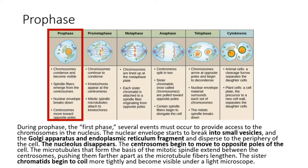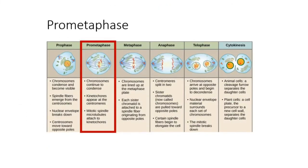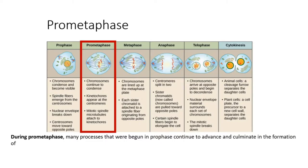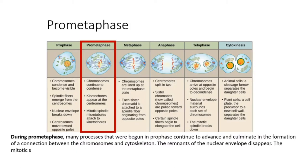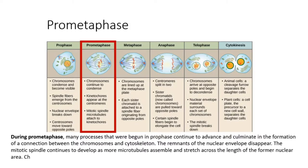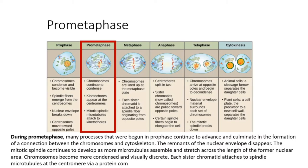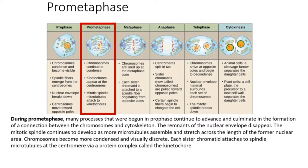During prometaphase, many processes that were begun in prophase continue to advance and culminate in the formation of a connection between the chromosomes and cytoskeleton. The remnants of the nuclear envelope disappear. The mitotic spindle continues to develop as more microtubules assemble and stretch across the length of the former nuclear area. Chromosomes become more condensed and visually discrete. Each sister chromatid attaches to spindle microtubules at the centromere via a protein complex called the kinetochore.